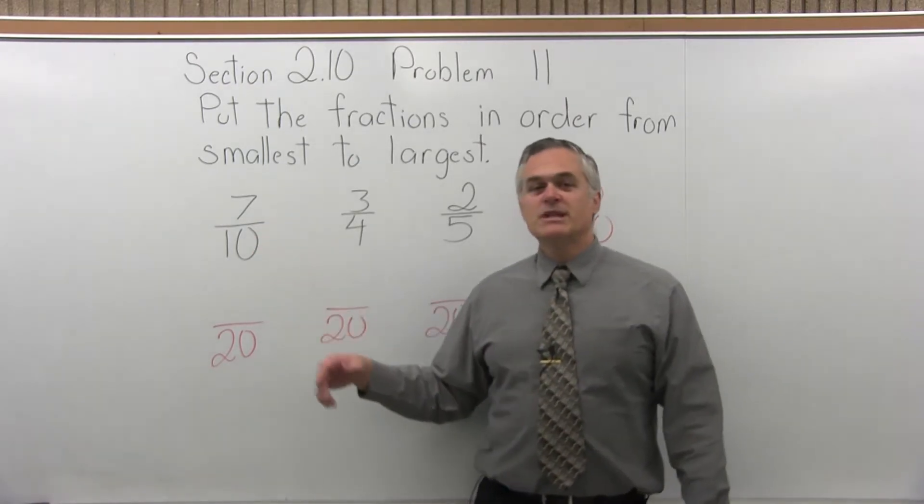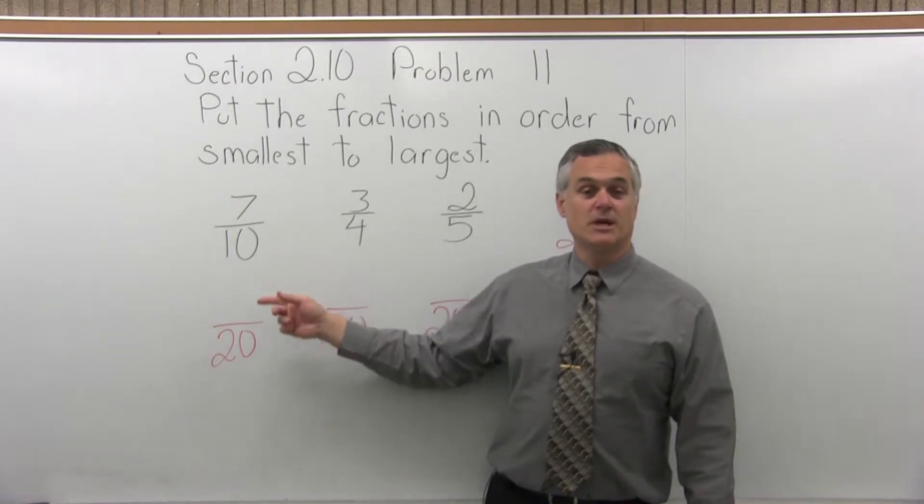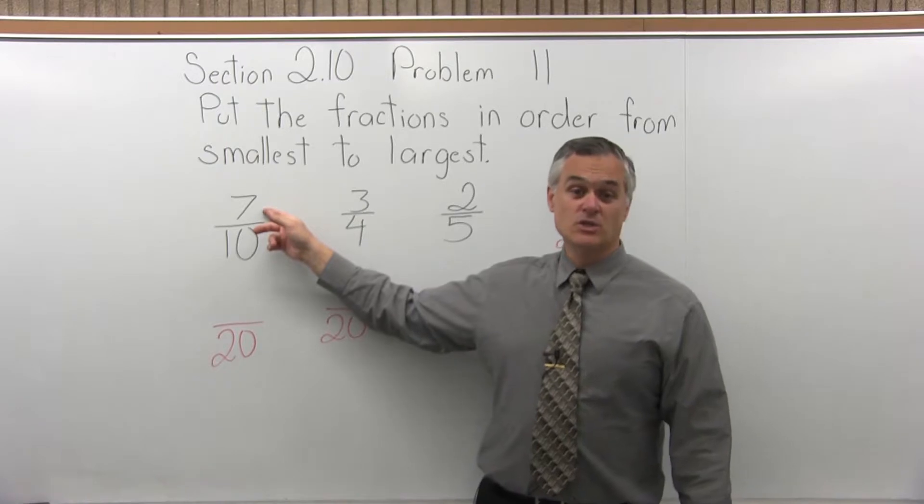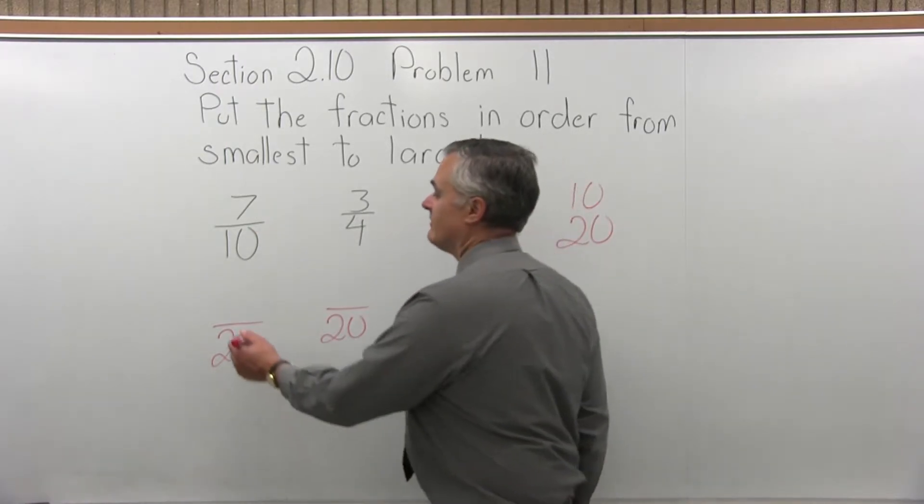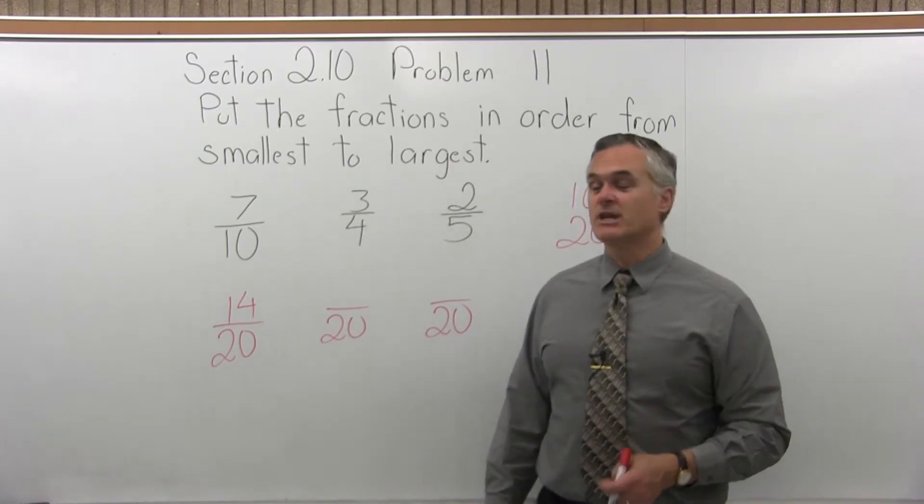So the 7 over 10, if I made the denominator 20, I must have multiplied the 10 in the denominator times 2 to make it a 20. So the 7 in the numerator must also be multiplied times 2. 7 times 2 is 14. 14 over 20 is the same as 7 over 10.